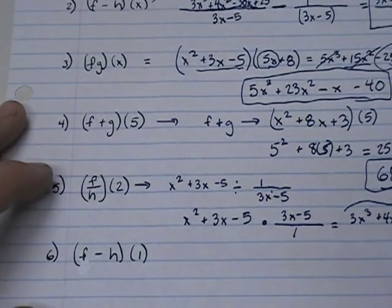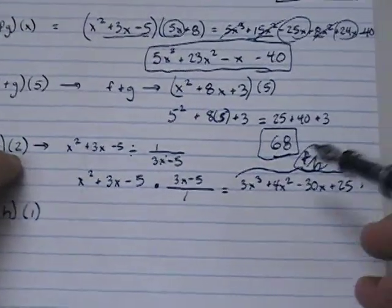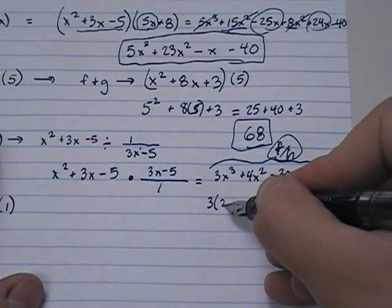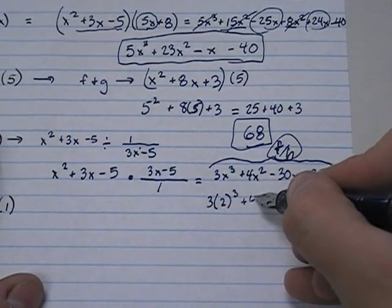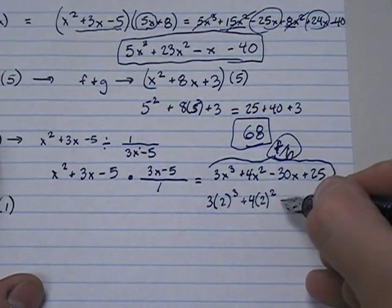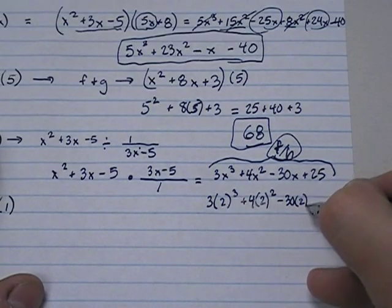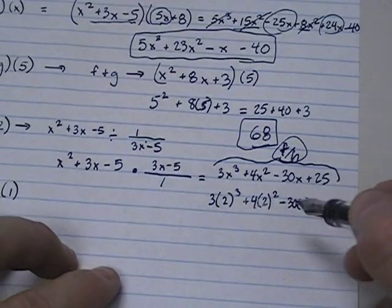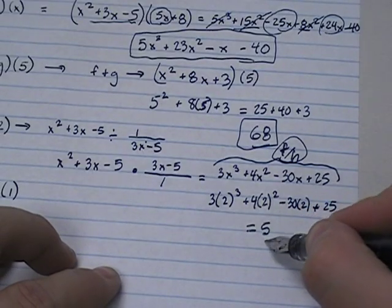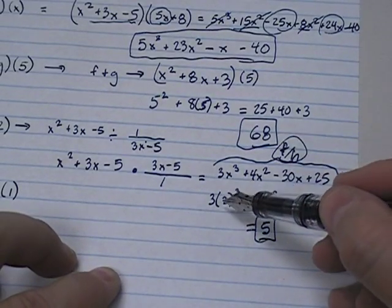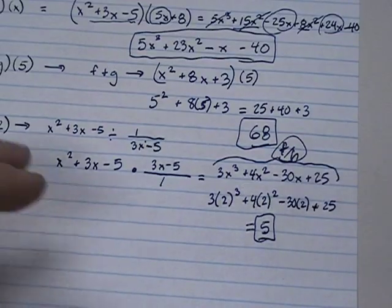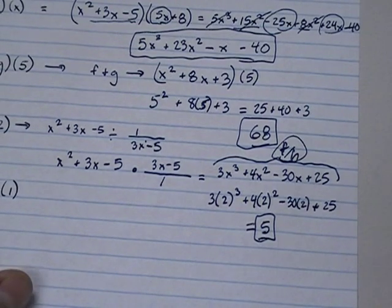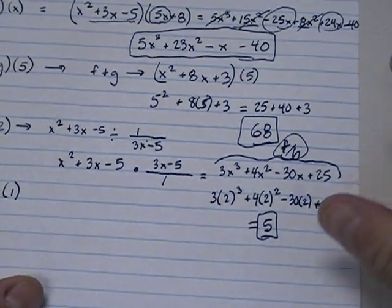I want to know f over h of 2. So now everywhere I have x, I put a 2. So 3 times 2 cubed plus 4 times 2 squared minus 30 times 2 plus 25. I work this out, I end up with a grand total of 5. Because 2 to the third is 8, and 3 times 8, and then 2 squared is 4, and 4 times 4, and then minus 60. And you add all this up, and you end up with a grand total of 5.